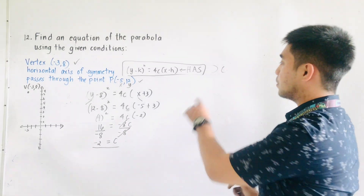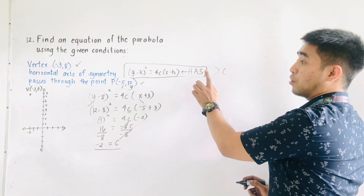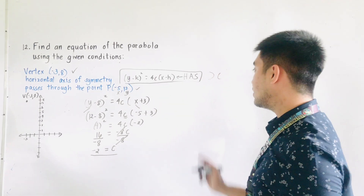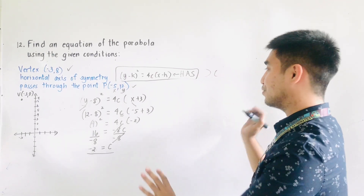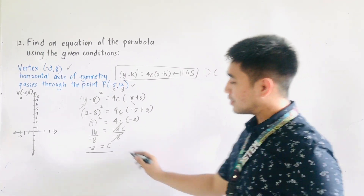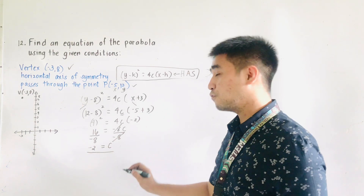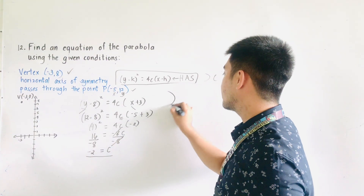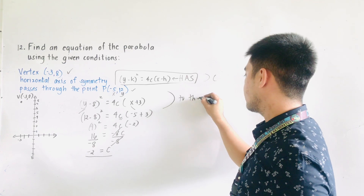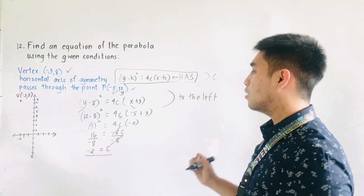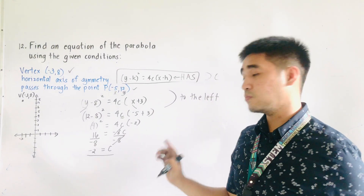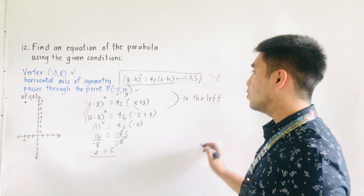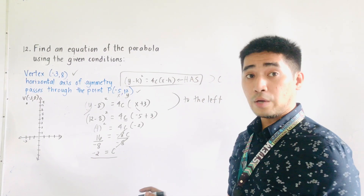Therefore, if our parabola is having horizontal axis of symmetry, it either opens to the left or to the right. Since c is negative 2, our parabola opens to the left. Our parabola opens to the left since the value of c is negative. Let us now find the equation.